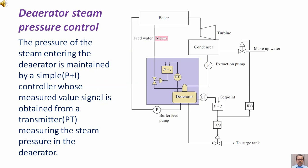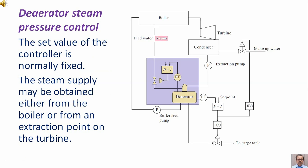Deaerator steam pressure control: The pressure of the steam entering the deaerator is maintained by a simple proportional plus integral controller whose measured value signal is obtained from a pressure transmitter measuring the steam pressure in the deaerator. The set value of the controller is normally fixed. The steam supply may be obtained either from the boiler or from an extraction point on the turbine.